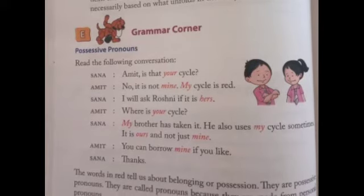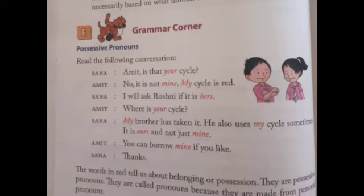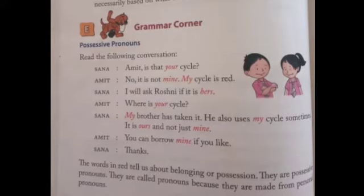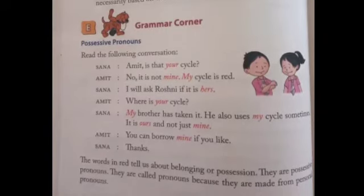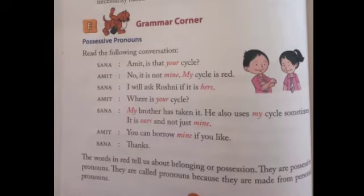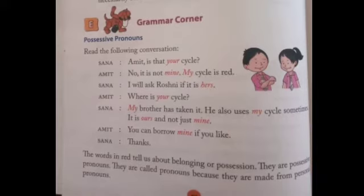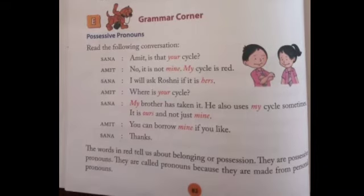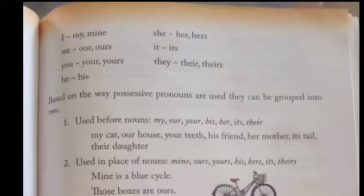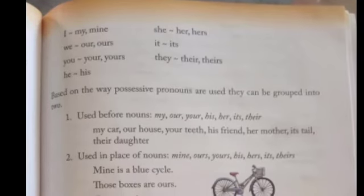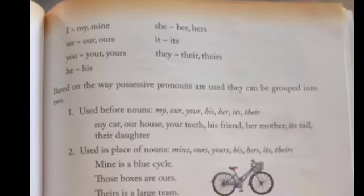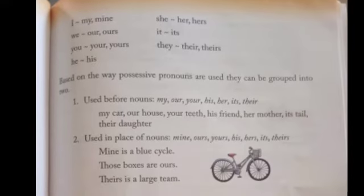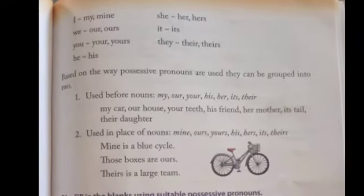See children, in this conversation some words are written highlighted in red ink — mine, hers, your, ours, mine, etc. So these words are called Possessive Pronouns. Possessive pronouns means it is showing personal ownership — it belongs to you, not owned by others. The words tell about belonging or possession. They are called pronouns because they are made from personal pronouns. It is only personal, it is your own, not for others.